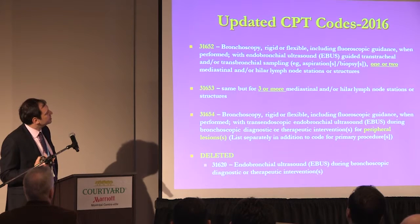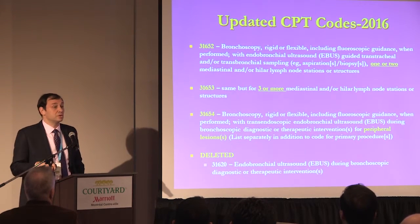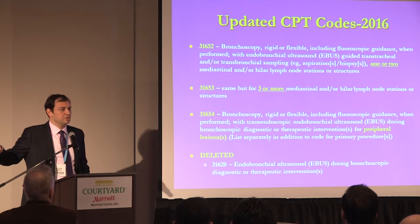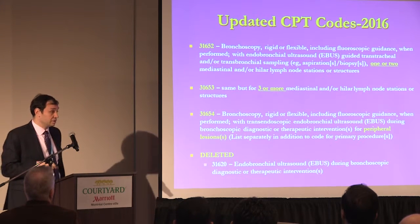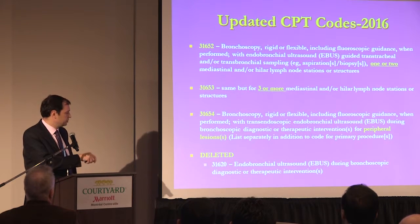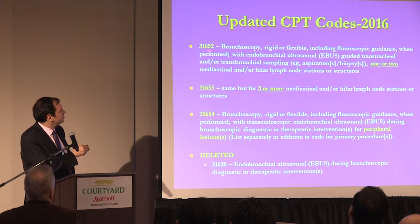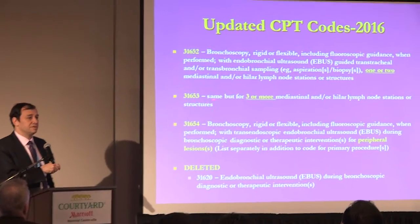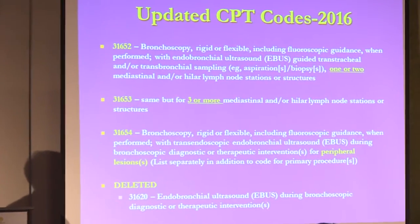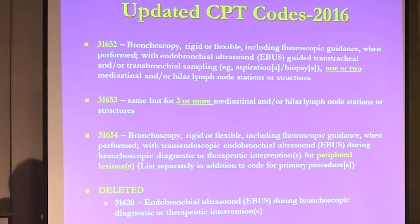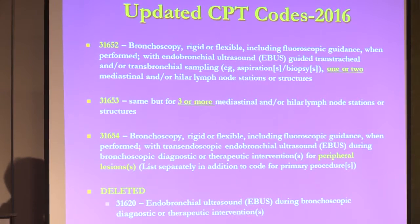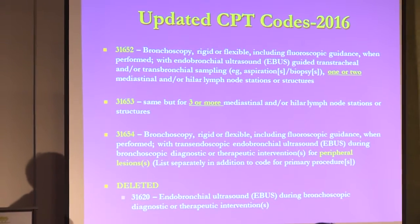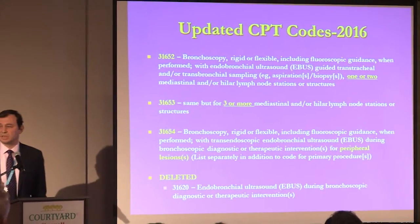Breaking news: CMS updated the codes for EBUS, which is going to affect all of us. We used to bill 31629 for TBNA and 31620 for EBUS as an add-on. That's going to change as of January — it's now bundled. You can no longer bill 31620. You bill 31652 if you do EBUS-TBNA of one or two lymph nodes, and 31653 for three or more. They also recognize the separation between central EBUS and peripheral EBUS, with a new code for radial EBUS. When you go back to your institution, talk to your manager about making sure those codes are utilized as of January.